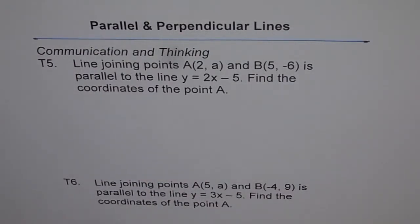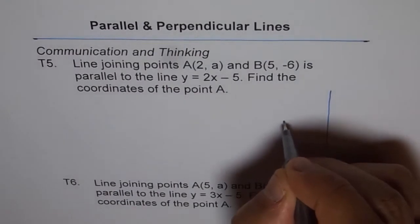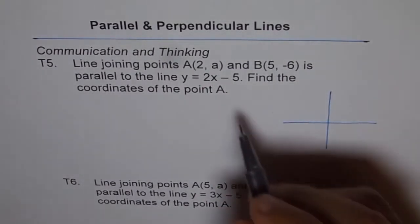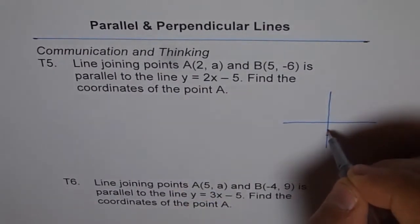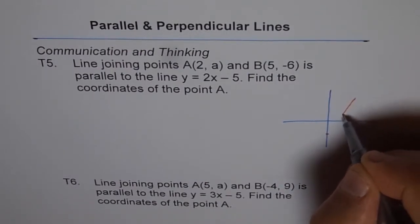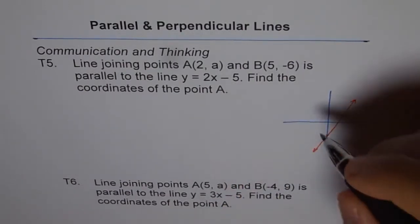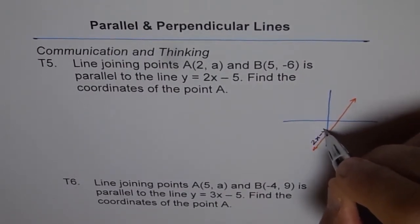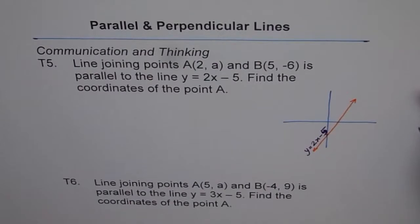Let me show you with a small sketch. We are given a line which is y = 2x - 5. The y-intercept is -5, and the slope is 2, so 2 rise and 1 run. There will be a line which goes like this — that line is y = 2x - 5.